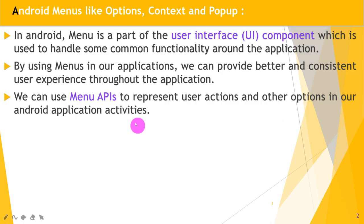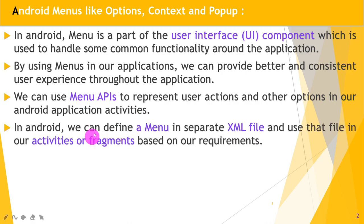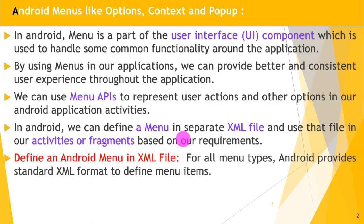We are familiar with the menu, menu item, and menu separators in Java, C-sharp, and other languages. Similarly, we can create our menus in Android. In Android, we can define a menu in a separate XML file and use that file in our activity or fragments based on our requirements. It is very beneficial because we can use that same XML file in a number of different activities.